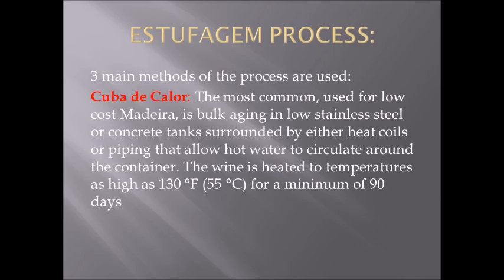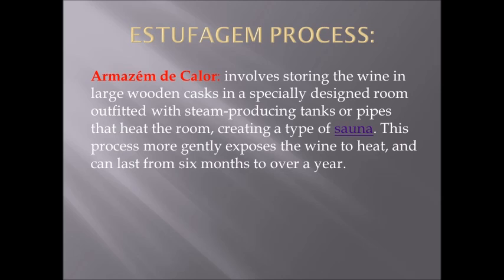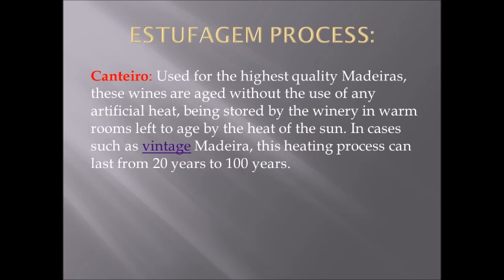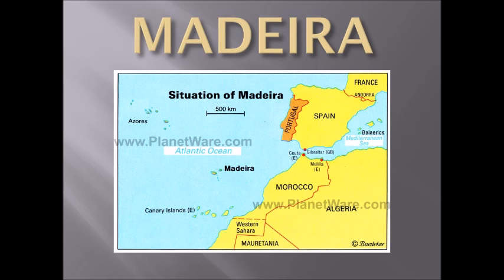Barbaresco DOCG: must age two years with one in oak; four years for Riserva. Softer than Barolo. Made from Nebbiolo grape. Bouquets of rose or violets. Flavor notes of cherry, truffle, and fennel. Can be smoky and earthy, with leather and tar.